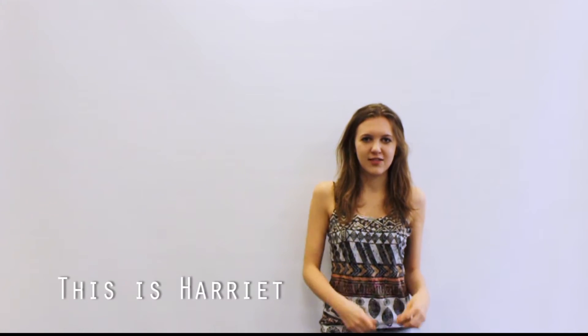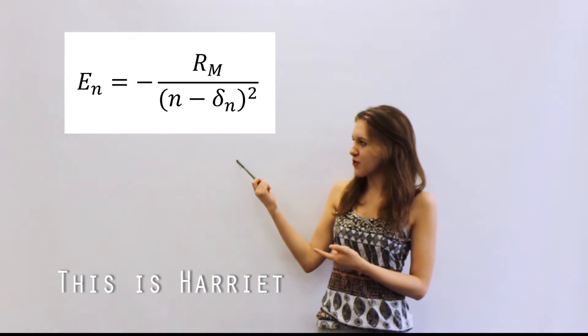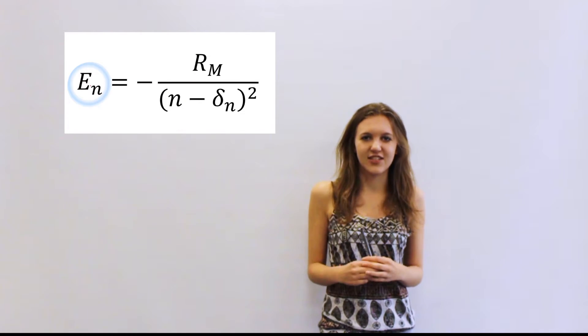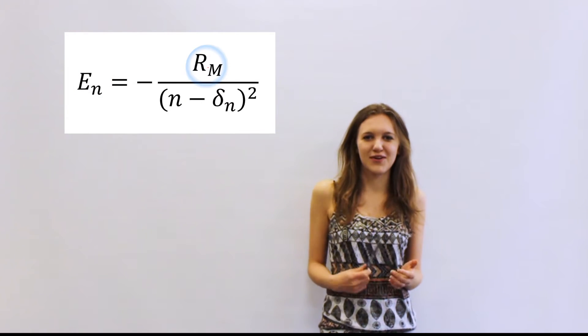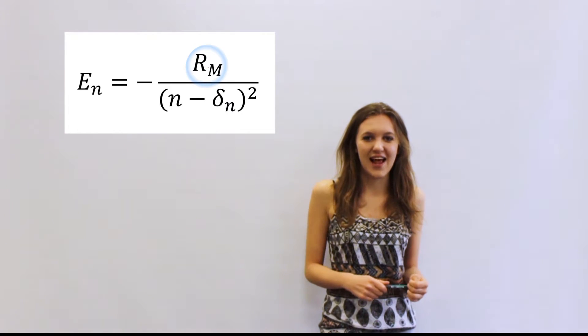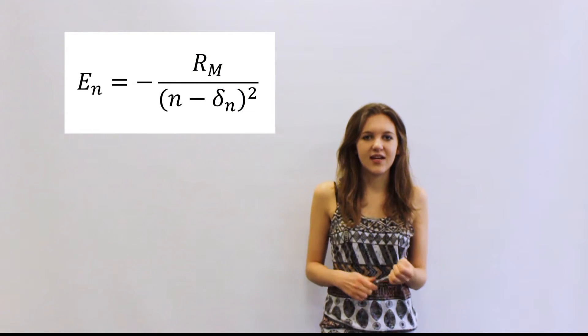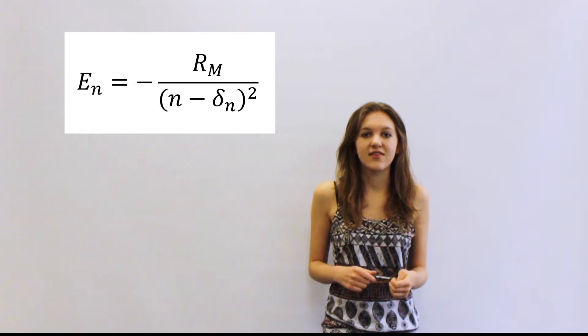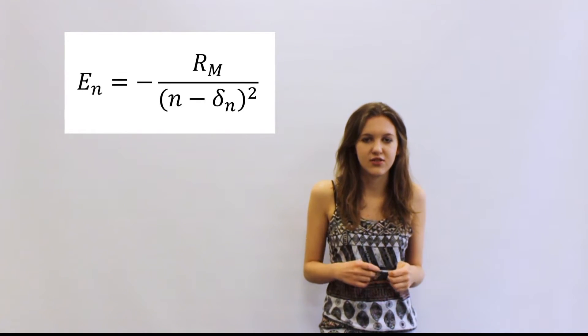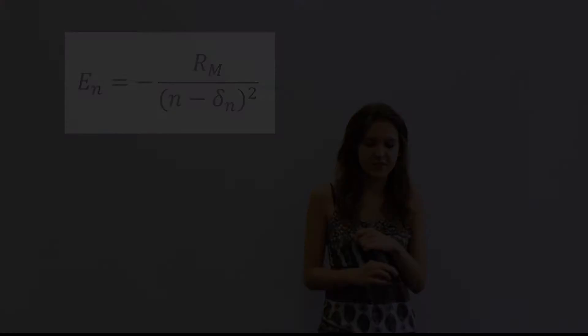Energy levels of the helium atom are given by this formula. E is the ionisation energy, R is the Rydberg constant for the given element, and delta is the quantum defect for the given end state. This accounts for the fact that the electrons do not entirely screen the charge of the nucleus. A Rydberg state is the state of an atom or molecule where its outer electron has been excited to an energy level with a very high principal quantum number N.